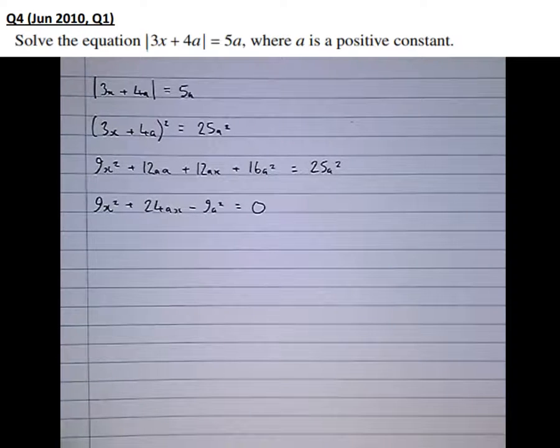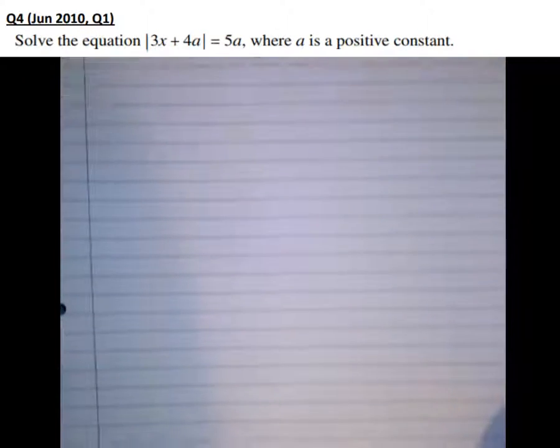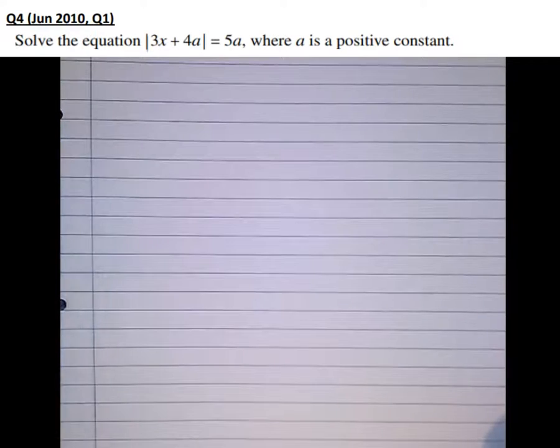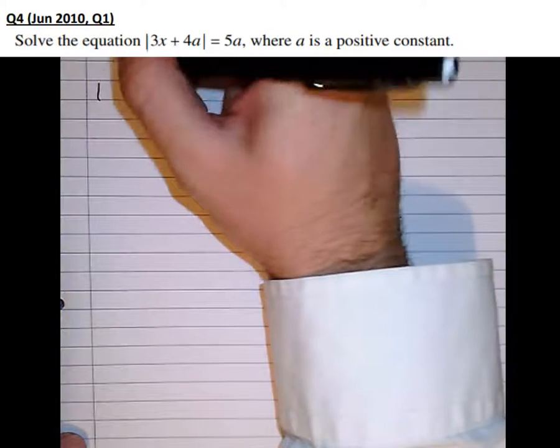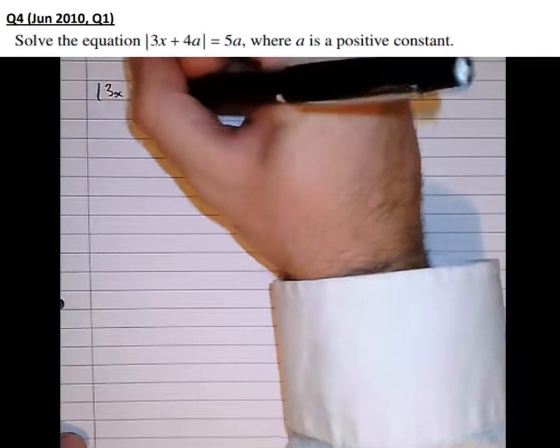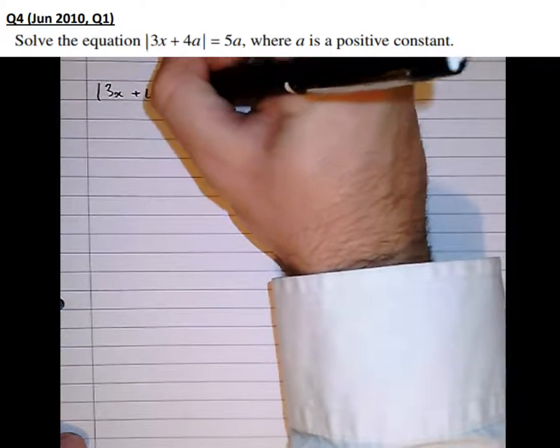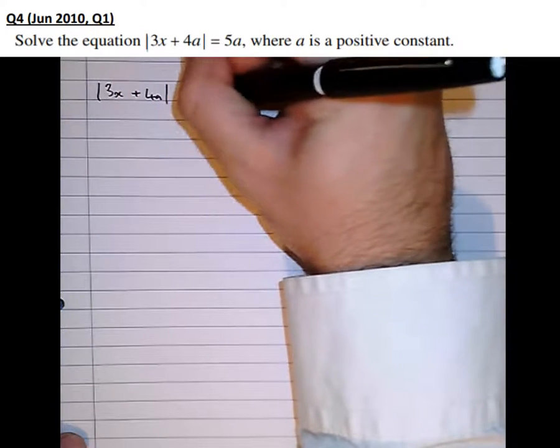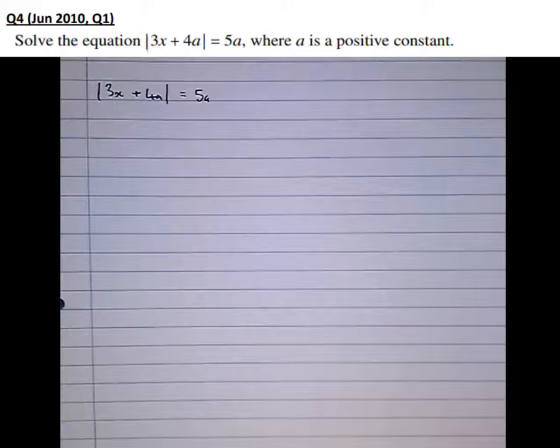There's actually a better method for doing this. So let's try again, but use a different method, which I'm going to call the plus or minus method. So modulus of 3x plus 4a is equal to 5a. So what the modulus sign does, for the purposes of this type of question, it takes whatever's in the modulus sign and makes it positive.